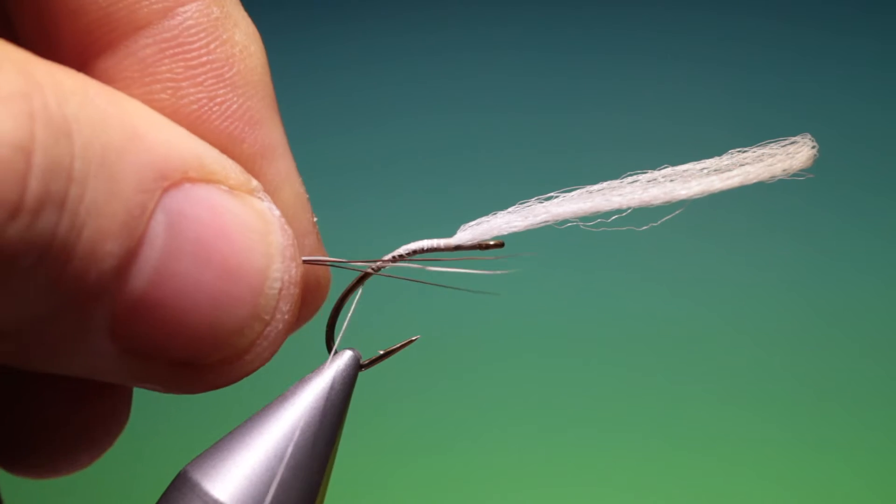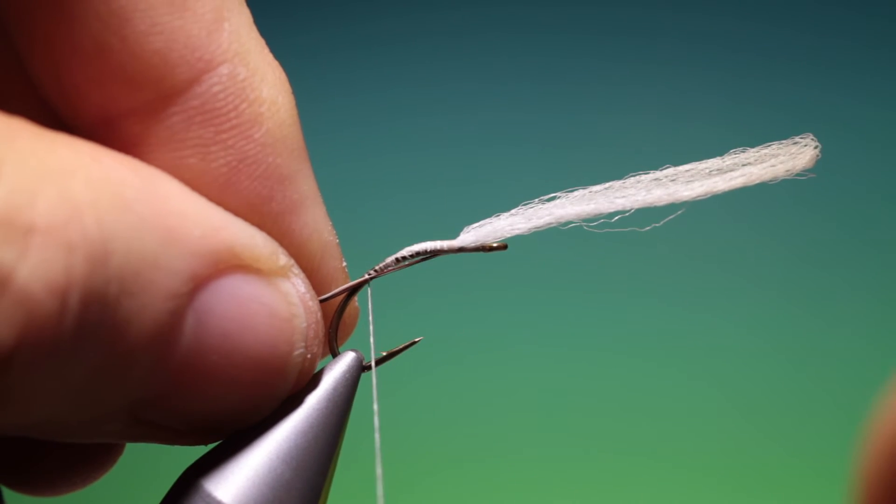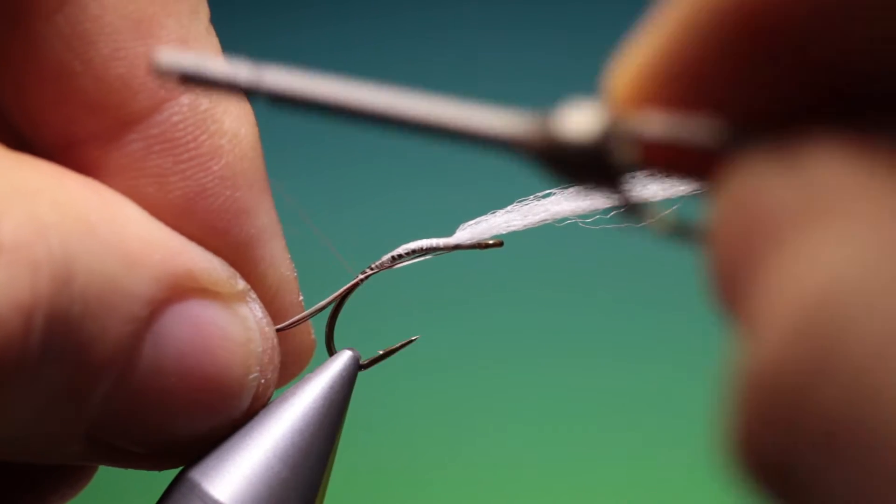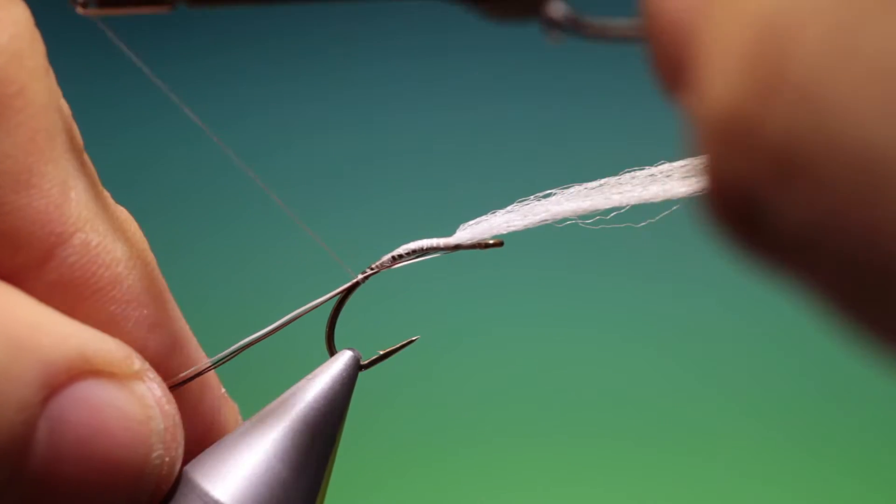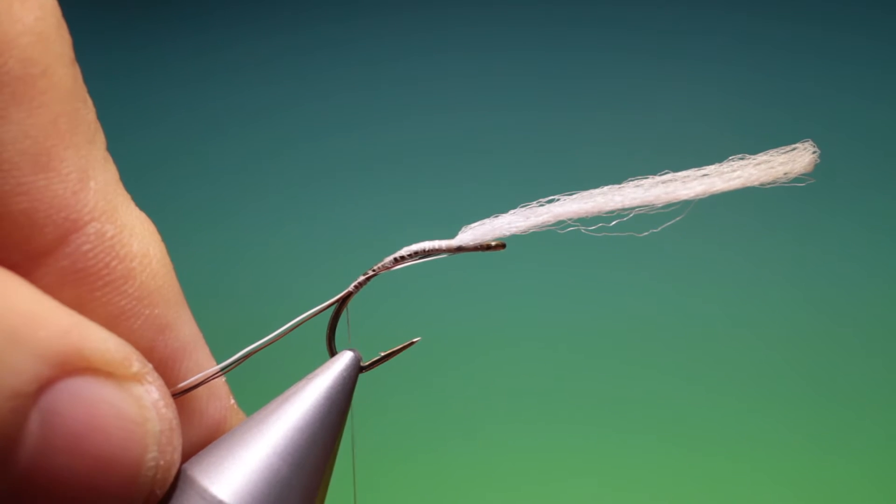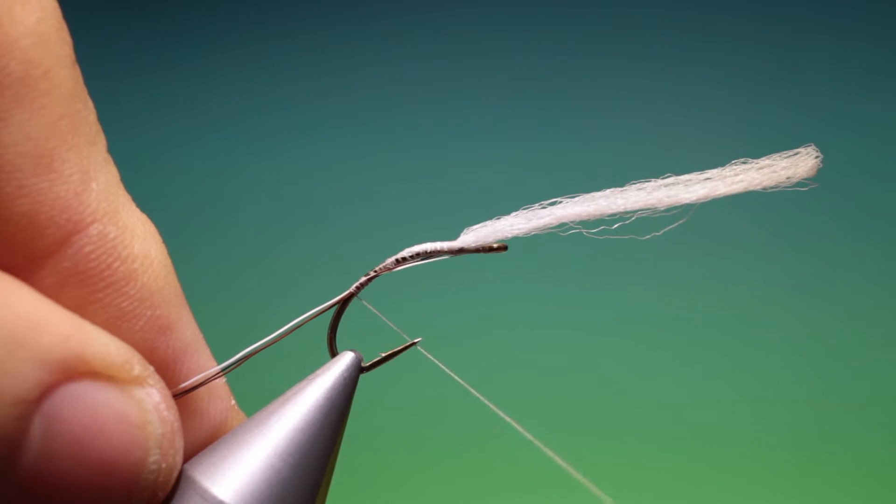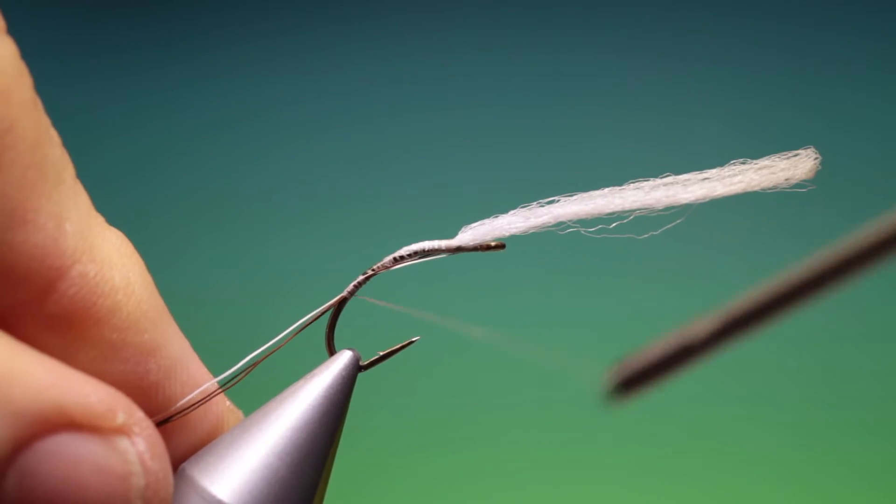Then we need three moose hairs, moose mane hairs and we'll just tack these in. Now the colour choice is yours, I've got a brown one, a black one and a white one. So I'll just flatten that tying thread again and go down the hook shank.